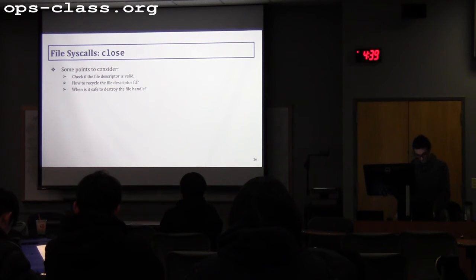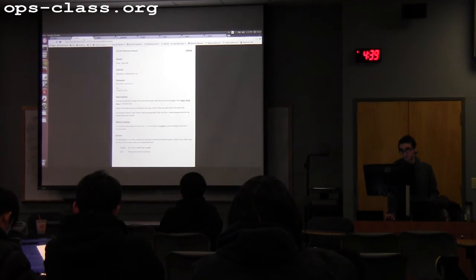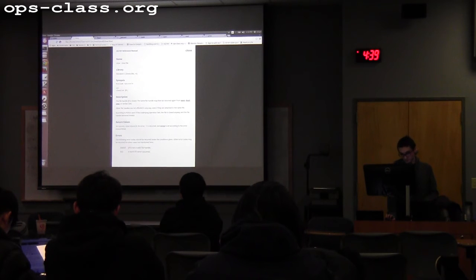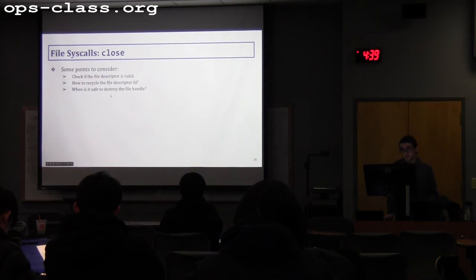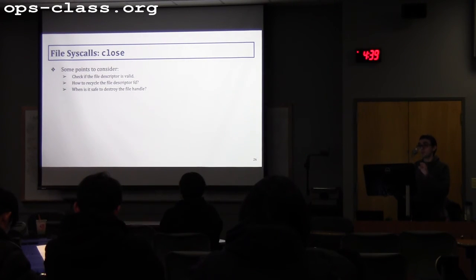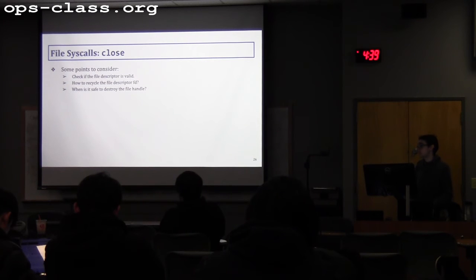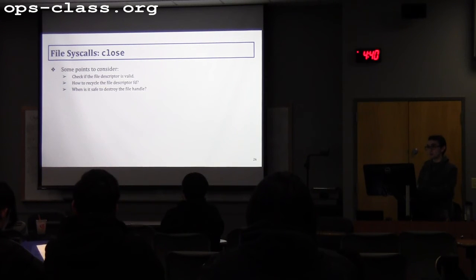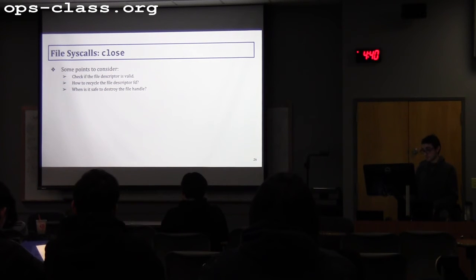For the close syscall, it takes a file descriptor and should return zero on success. Check if the file descriptor is valid. Think about how to recycle the file descriptor — once a file closes, that descriptor should become available for other files. Also determine when it is safe to destroy the file handle: if only the current process references it, destroy it; if others are referencing it, do not destroy it.